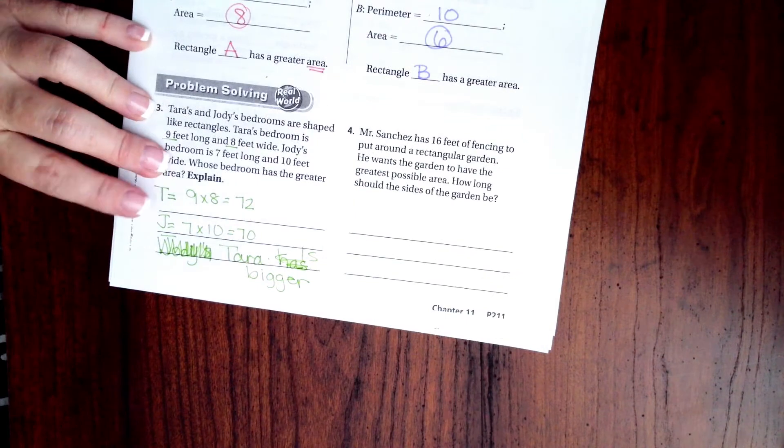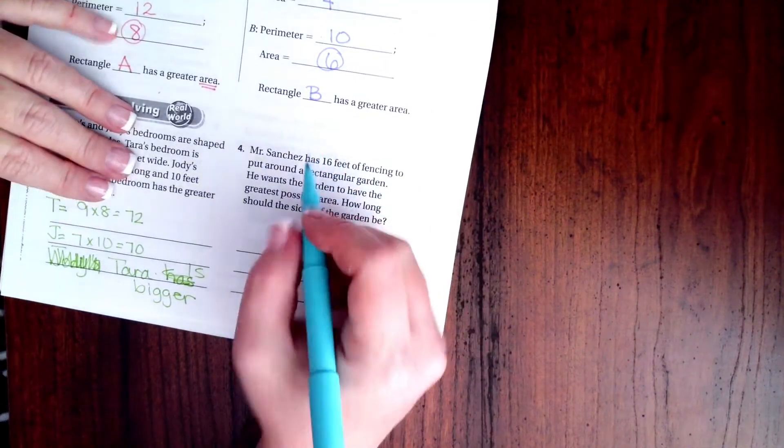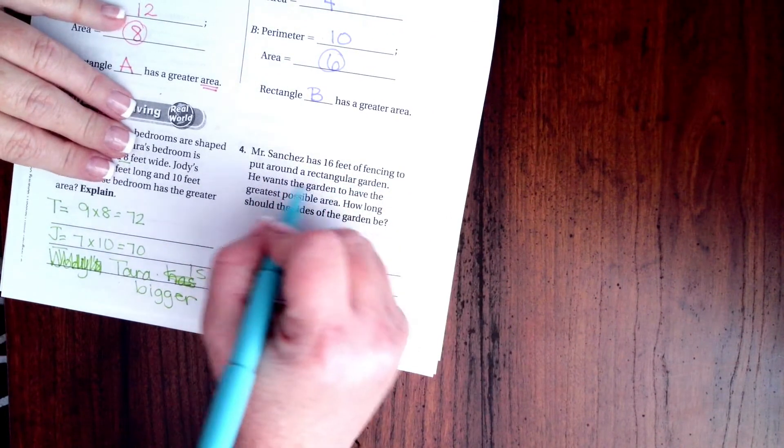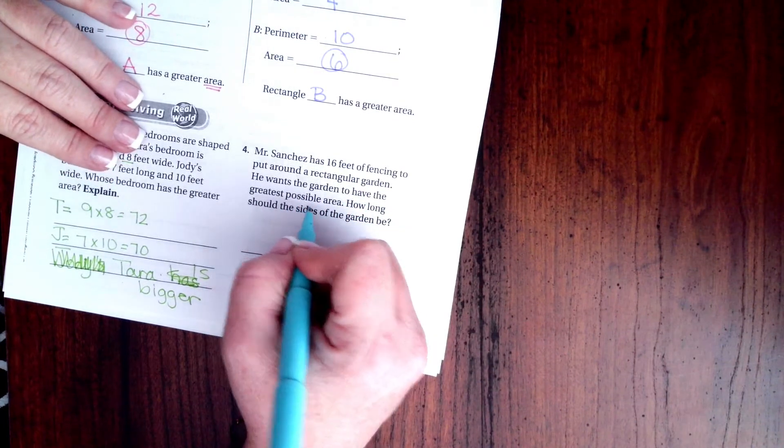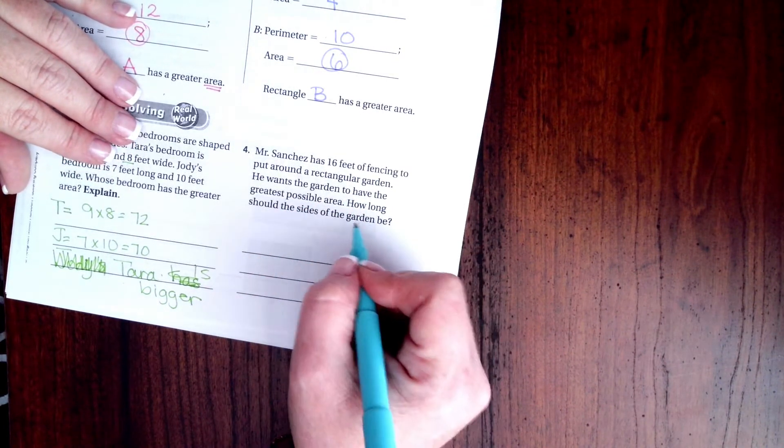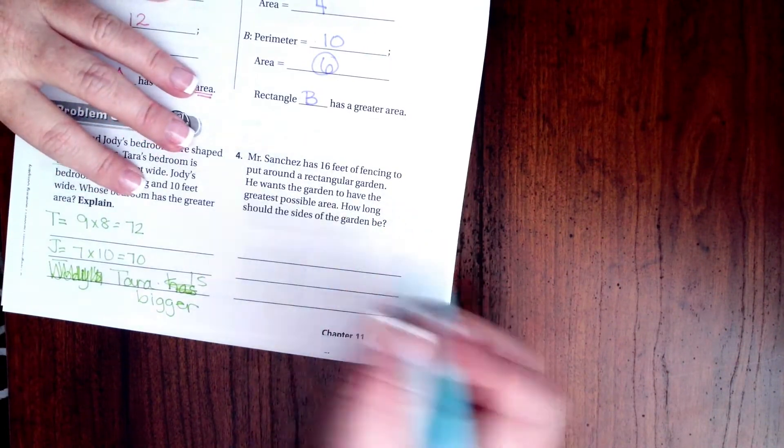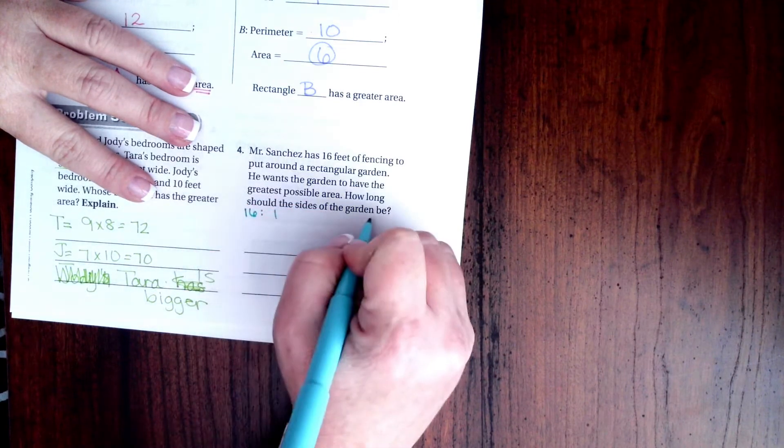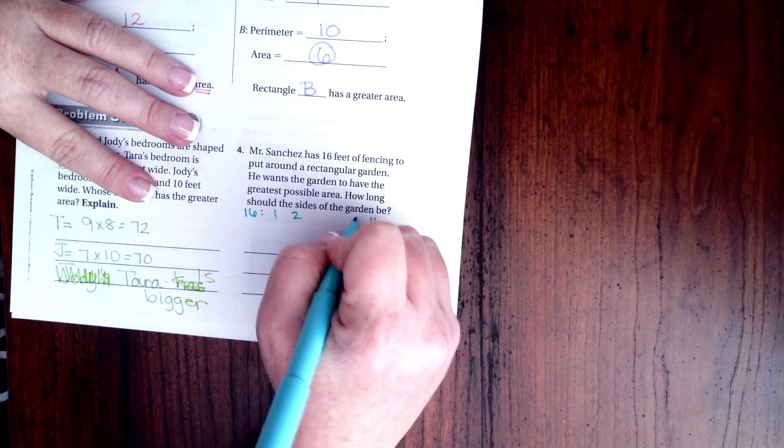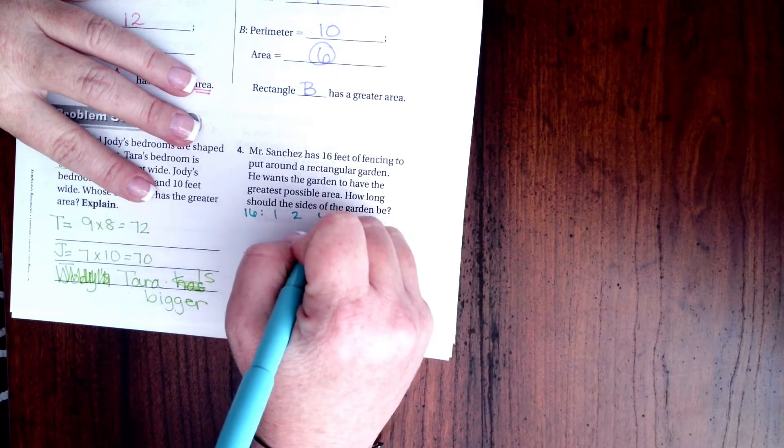Alright guys, Mr. Sanchez has 16 feet of fencing to put around a rectangular garden. He wants the garden to have the greatest possible area. How long should the size of the garden be? So, for this, I'm going to go 16 can be made 1 times 16, 2 times 8, and 4 times 4, okay?